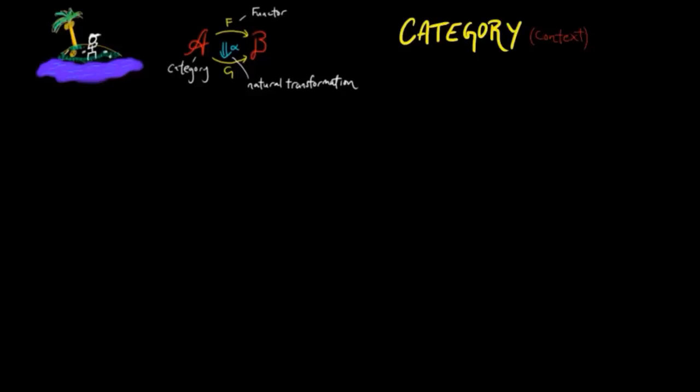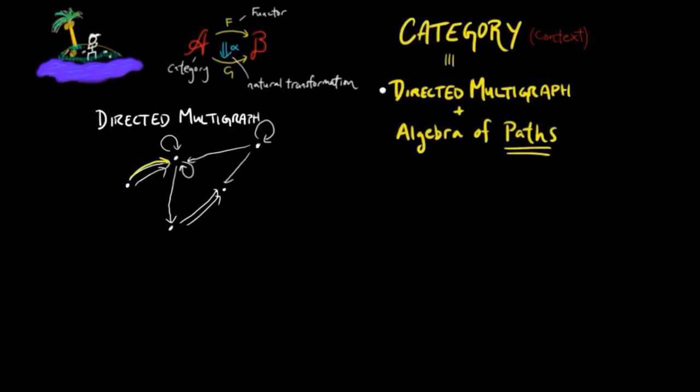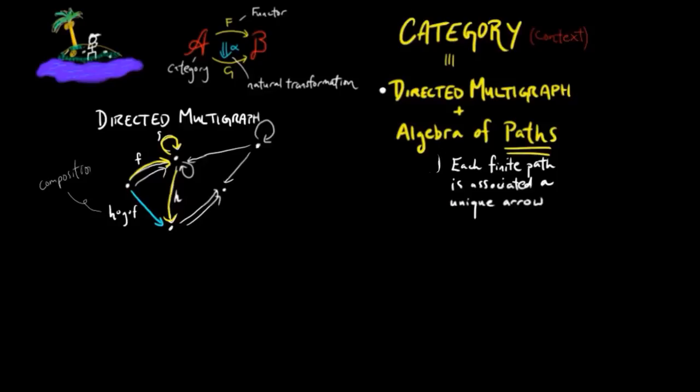Roughly speaking, a category is a directed multigraph, which we will just call a graph, equipped with an algebra of paths. By an algebra of paths we mean to each finite path is associated a unique arrow. An empty path gives us the identity morphisms, the one paths the morphisms, the two paths composition, and three paths the associativity law of composition.